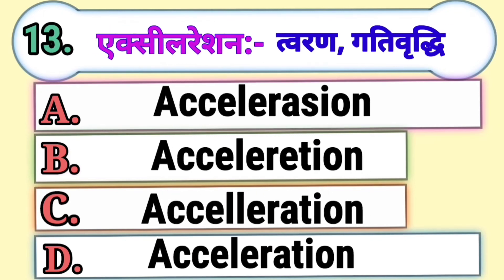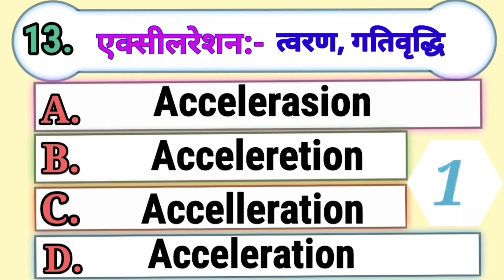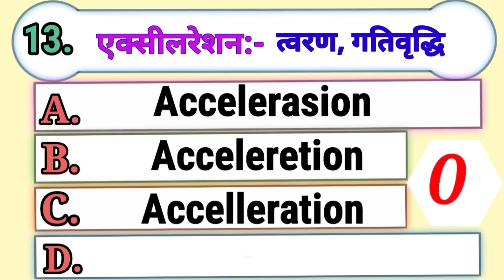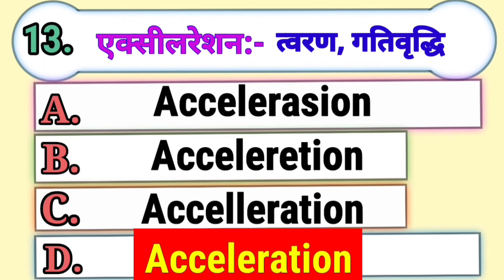Question 13. Acceleration means Twaran or Gati Vriddhi. Choose the correct spelling of acceleration. Option A, Option B, Option C, or Option D. The correct answer is Option D, Acceleration.